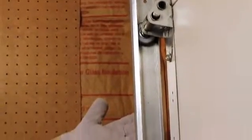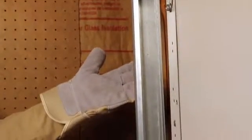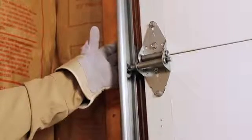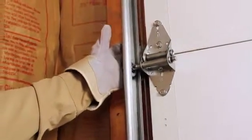Another visual inspection you can perform is to look at the track. Make sure that it's secure and in line. You also want to check the cables to make sure they are not frayed. Also make sure that the rollers run smoothly up and down the track.